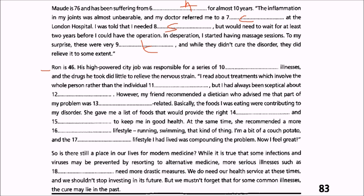Ron is 46. His high-powered city job was responsible for a series of stress-related illnesses, and the drugs he took did little to relieve the nervous strain. 'I read about treatments which involve the whole person rather than the individual symptoms, but I had always been skeptical about holistic medicine like aromatherapy.'